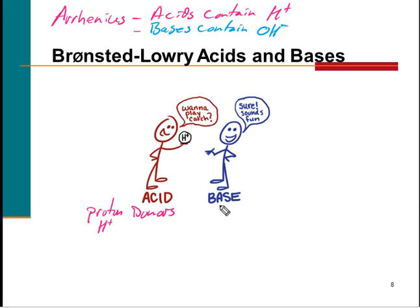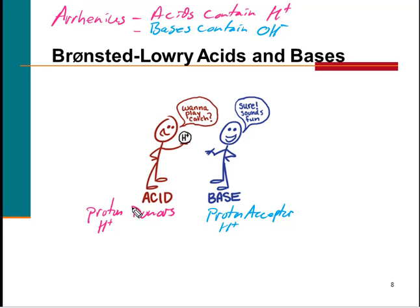A base in the Bronsted-Lowry theory is a proton acceptor — a proton or hydrogen ion acceptor. So unlike Arrhenius, where we have hydrogen ions and hydroxide ions, there's no hydroxide ion with the Bronsted base. Both acids and bases are defined in terms of what they do with hydrogen ions. Acids are proton donors; bases are proton acceptors — they're opposites.